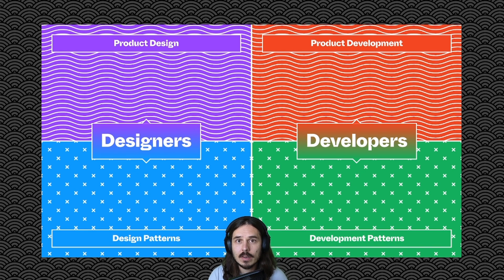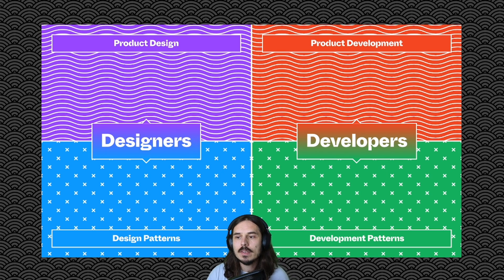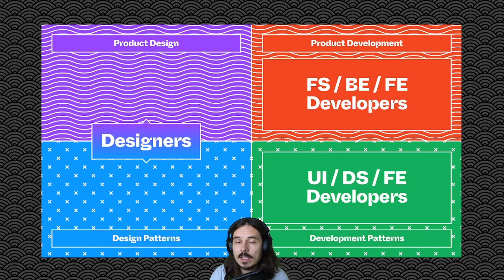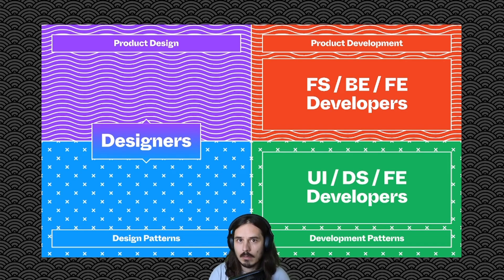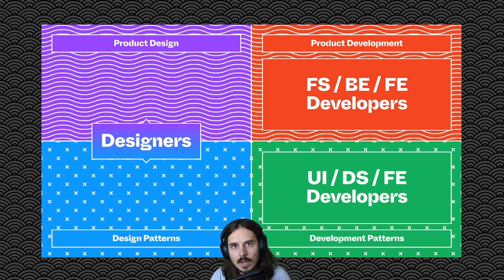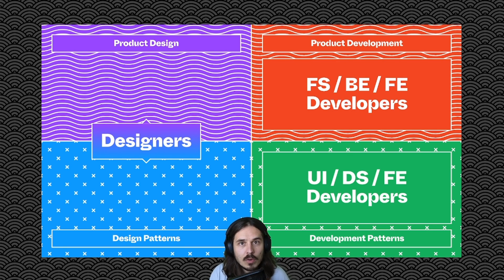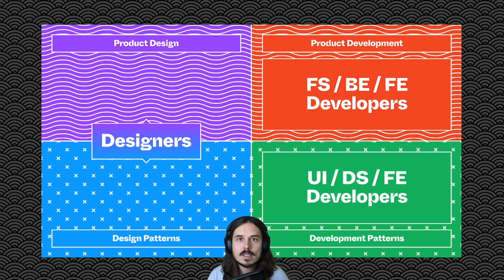You want to start building patterns to make it easier to implement things as they change. You might find yourself in a scenario where you have designers doing the design things and developers doing the development things. Ideally, you get to the place where individuals or teams are owning certain aspects directly. On the development side, you might have full-stack and front-end developers implementing components into the page, while development patterns are owned by UI engineers, design systems engineers, or front-end developers building out those patterns to support the product development effort.